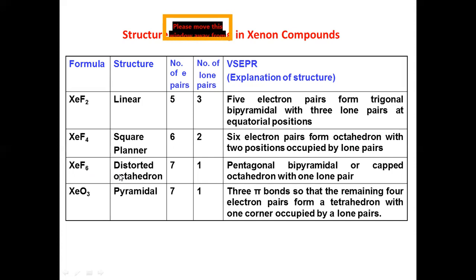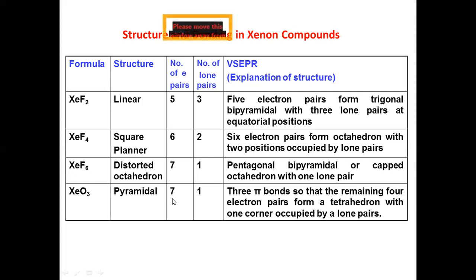Xenon hexafluoride has a distorted octahedron structure. The total number of electron pairs is seven and the number of lone pairs is one, giving a pentagonal bipyramidal or capped octahedron arrangement. Xenon trioxide (XeO₃) has a pyramidal structure with seven electron pairs and one lone pair; three pi bonds mean the remaining four electron pairs form a tetrahedron with one corner occupied by the lone pair.